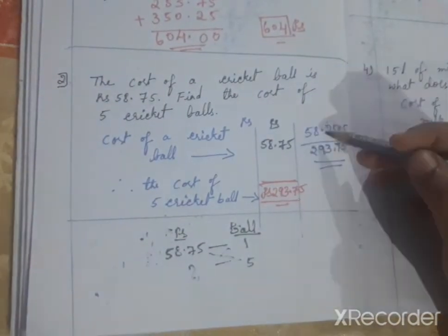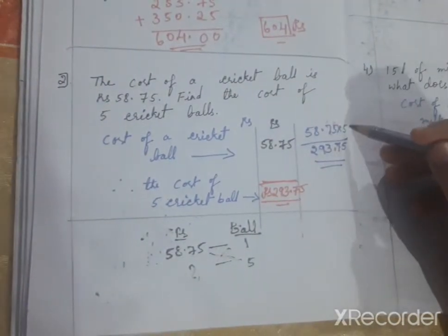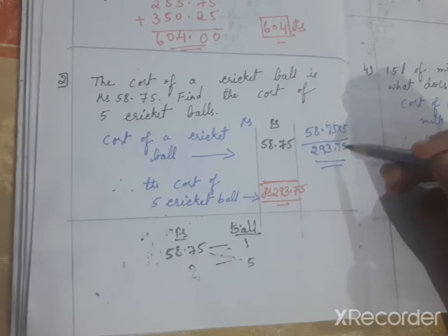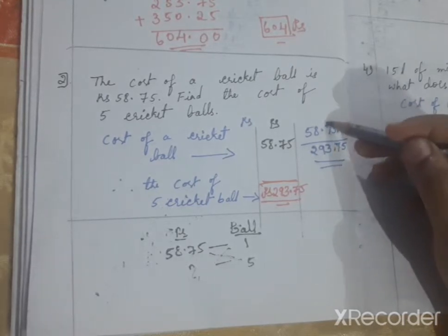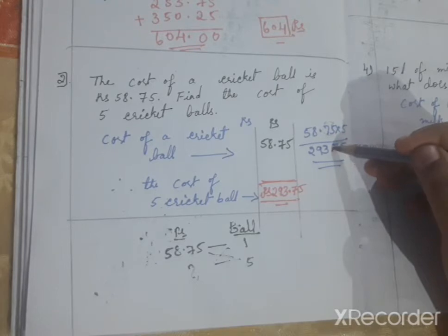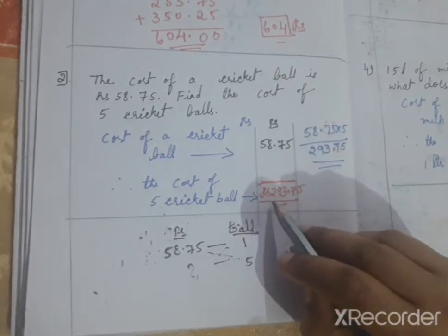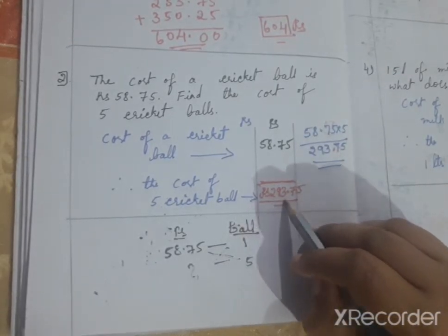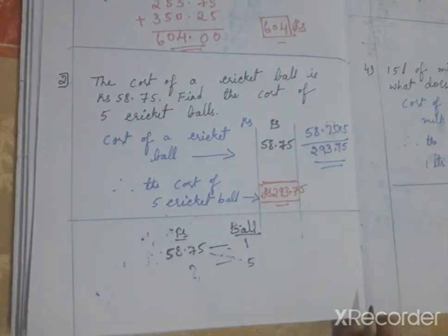Multiply 58.75 into 5. You get 293.75. After putting the decimal point after two digits from the right, the answer is 293 rupees 75 paisa.